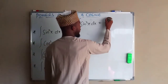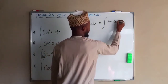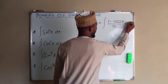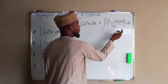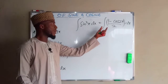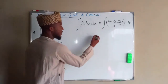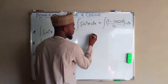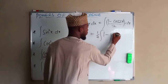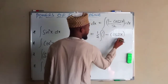So this is going to be the integral of (1 minus cos 2x) divided by 2 with respect to X. This is just the same function, but instead we can factor 1 over 2 outside, so this is equal to 1 over 2 times the integral of (1 minus cos 2x) with respect to X.